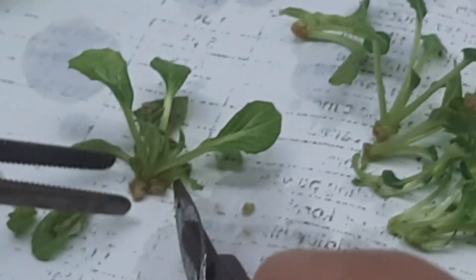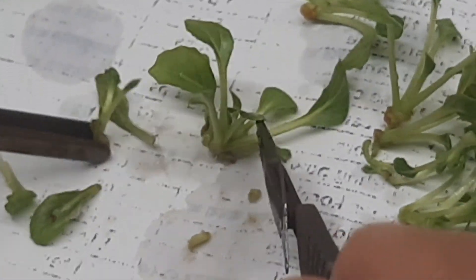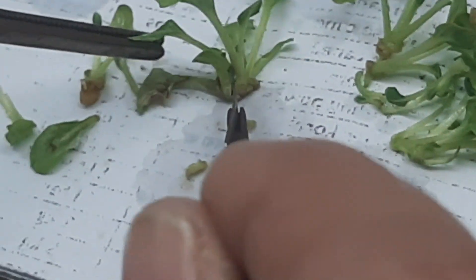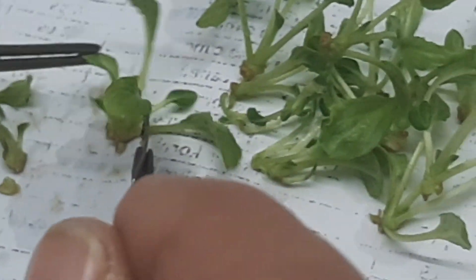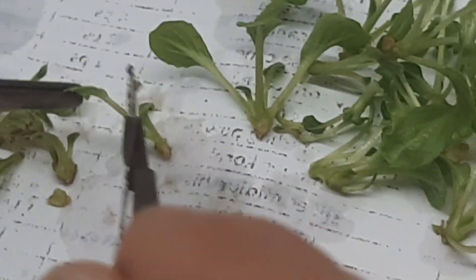Yes, this is the callus-like structure, brown color. The leaves which are dead, we are also discarding the dead leaves or the weak leaves. We just take the most healthy portion of the shoot.